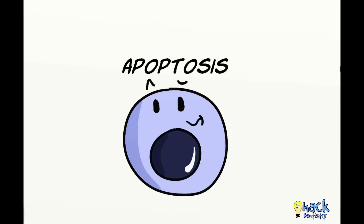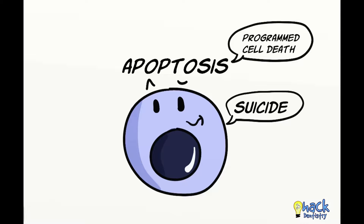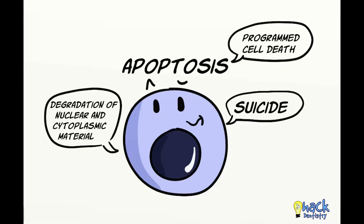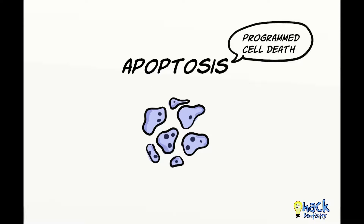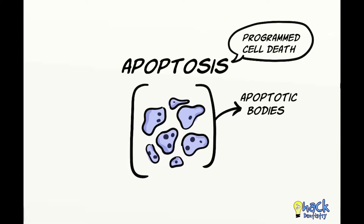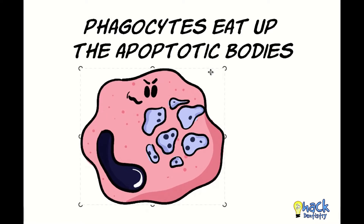Apoptosis, also called programmed cell death, is the process where the cell regulates its own death through the production of certain enzymes. These enzymes cause degradation of nuclear and cytoplasmic material and the cell breaks into fragments called apoptotic bodies. These apoptotic bodies are then gobbled up by phagocytes.